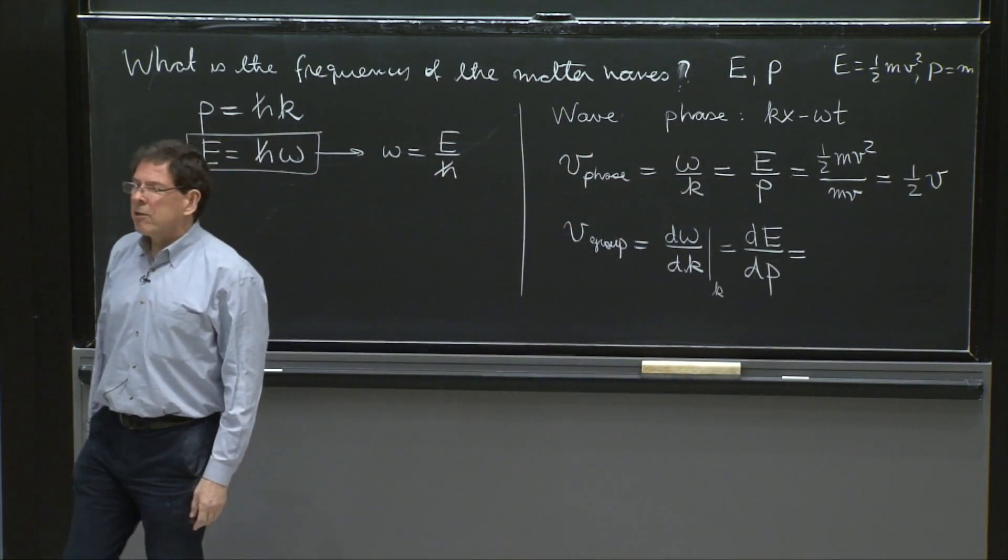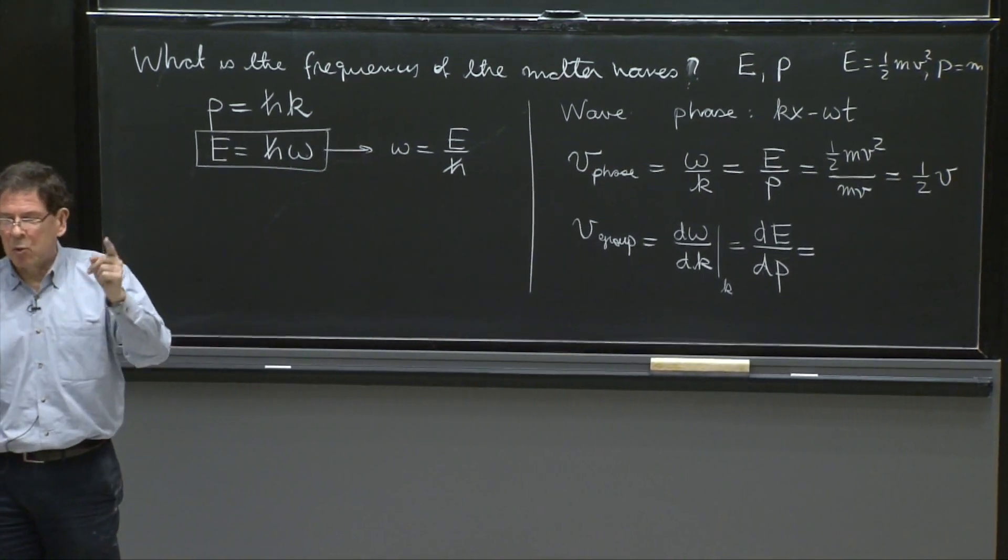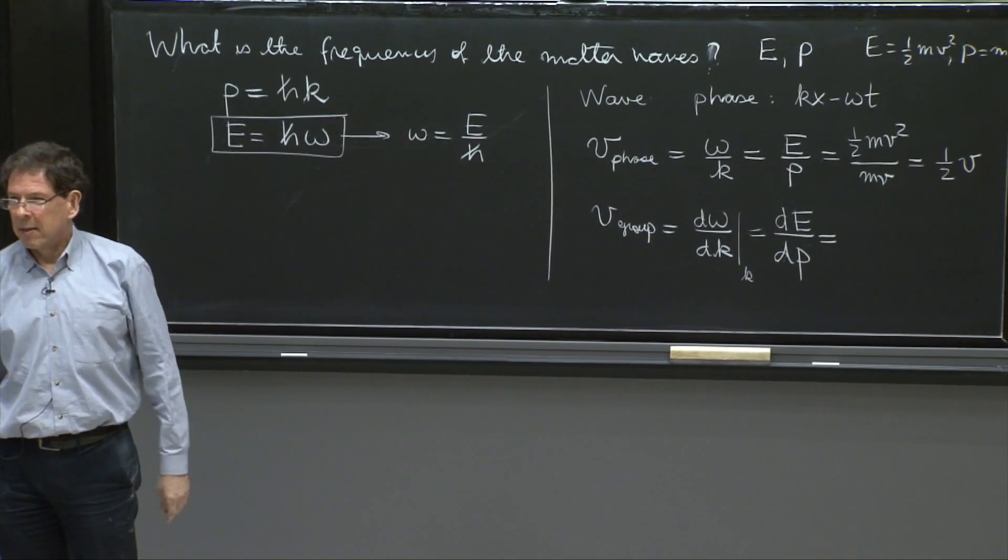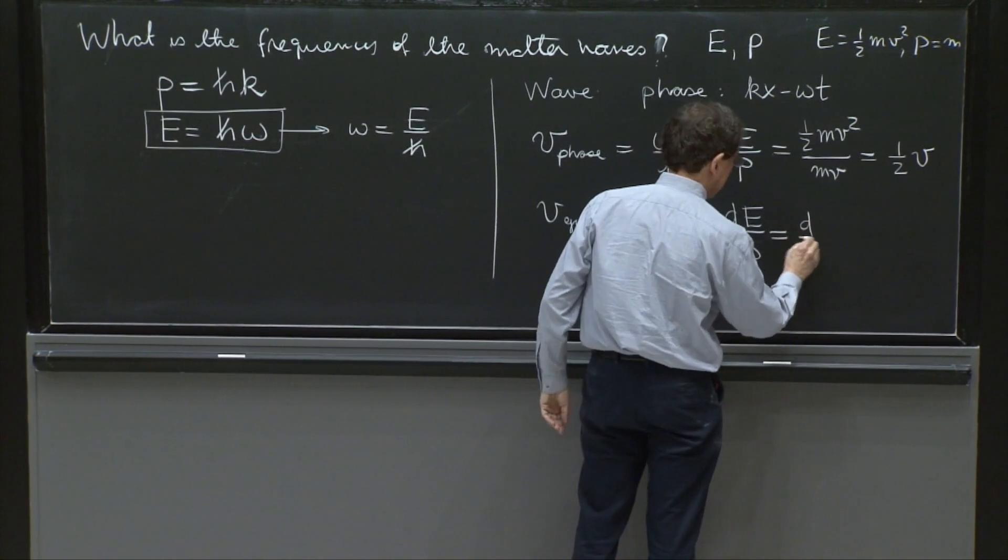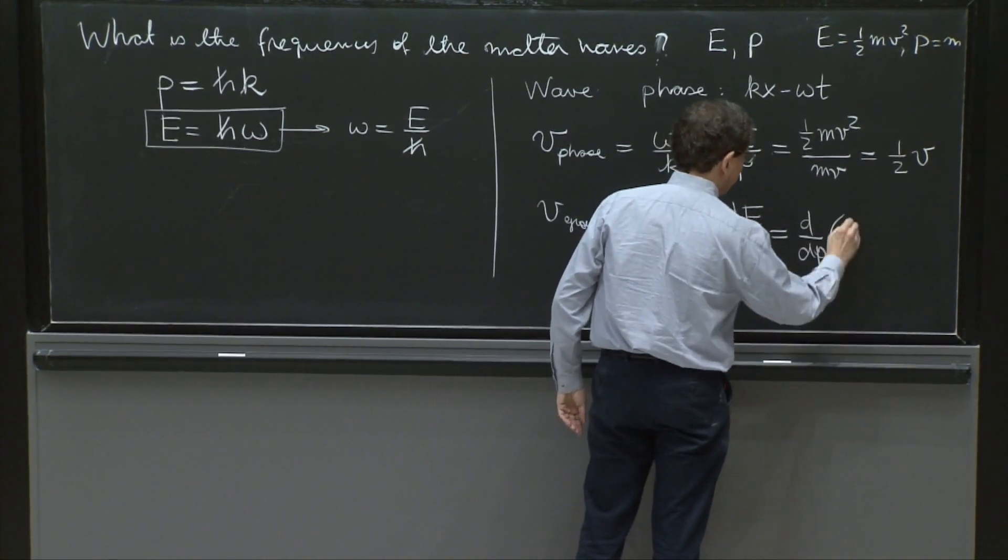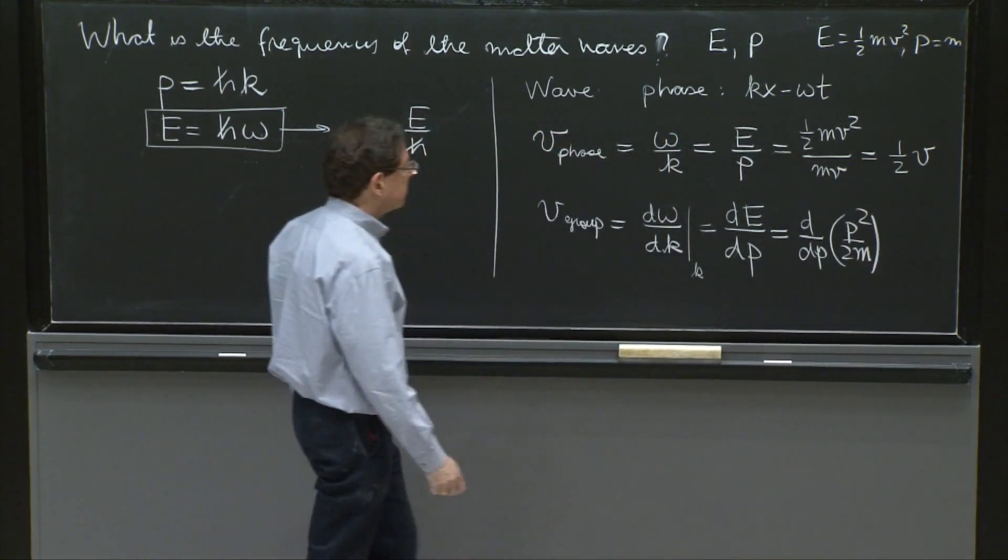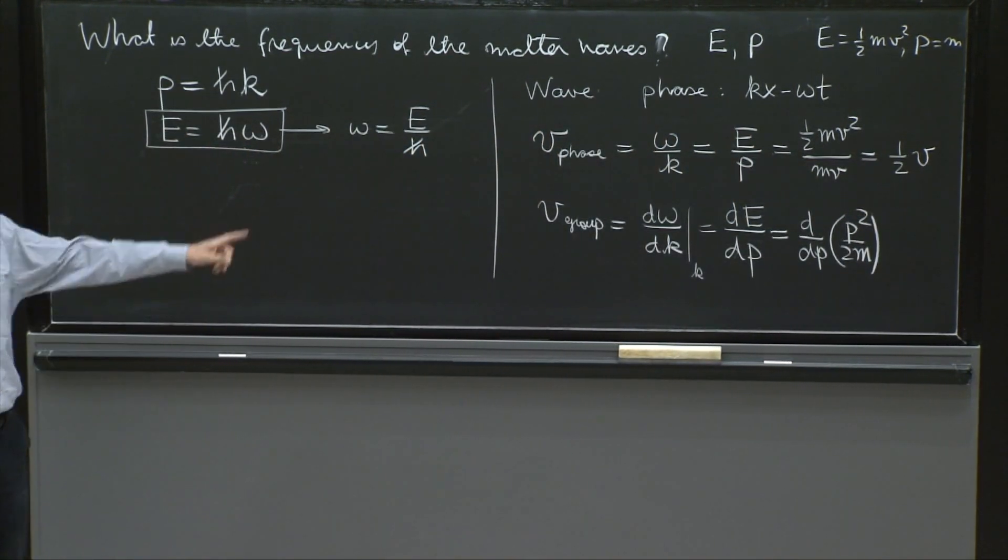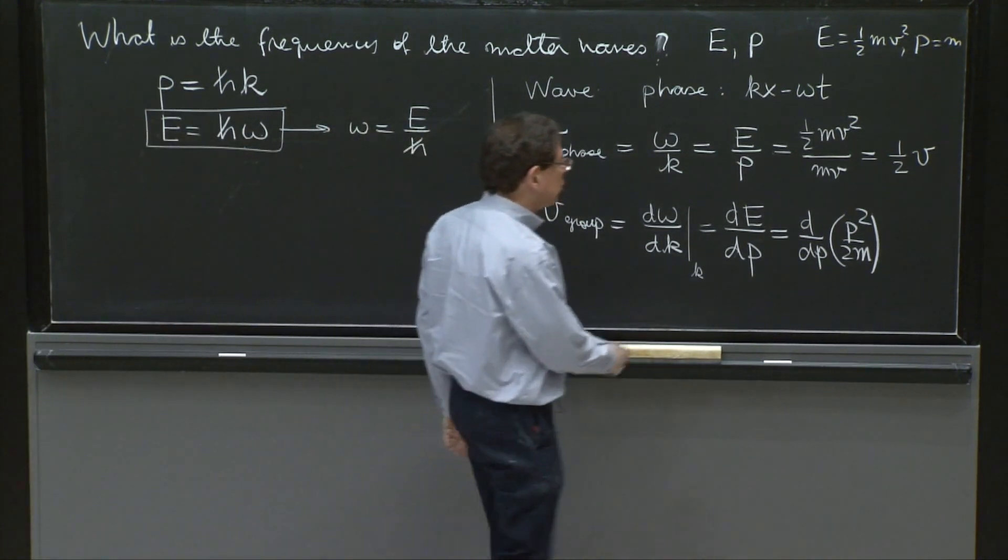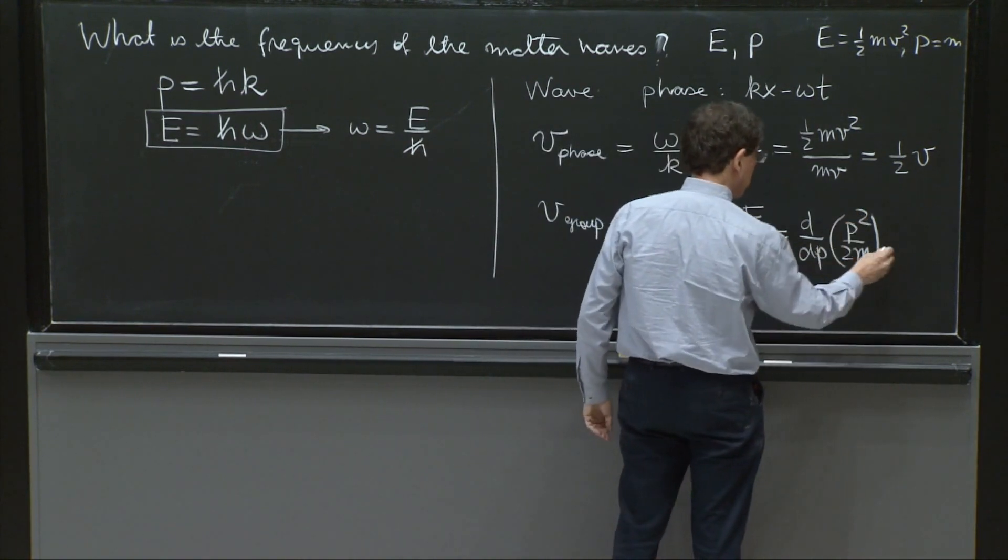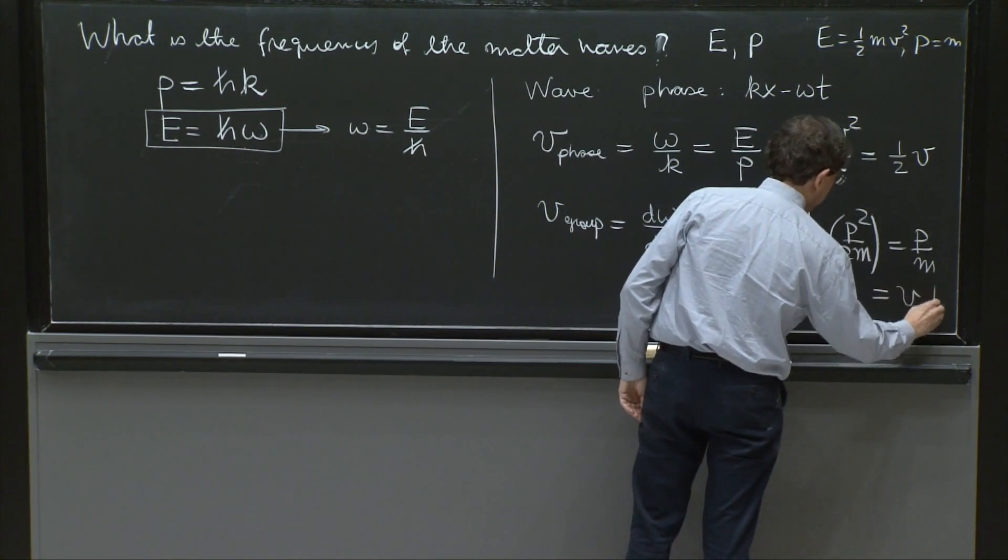But what is the kinetic energy in terms of the momentum? We wrote it last time, p squared over 2m. That's the kinetic energy expressed in terms of momentum. So this is d/dp of p squared over 2m. Write p equal mv, and you recover the kinetic energy. And this is just, because of the 2, p over m, which is the velocity of the particle.